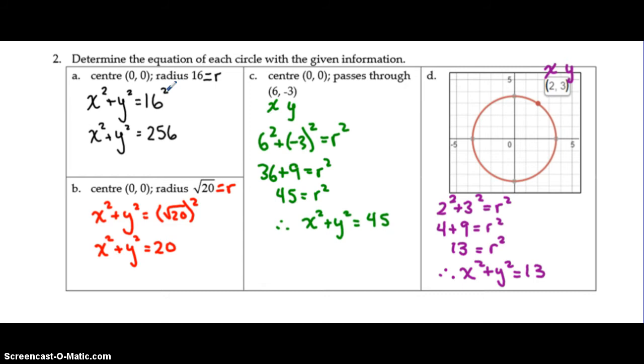So, x squared plus y squared equals 16 squared. Now, here the radius is equal to the square root of 20. So, when you take the square root of 20 and square it, the square root and the square are opposites. So, they cancel each other out. So, that's x squared plus y squared equals 20.